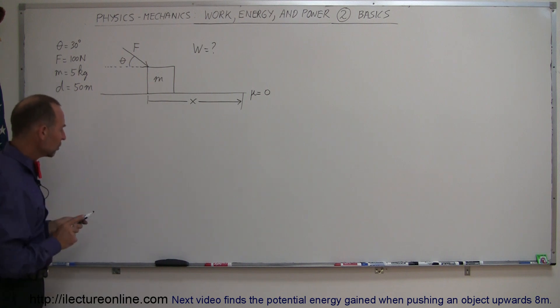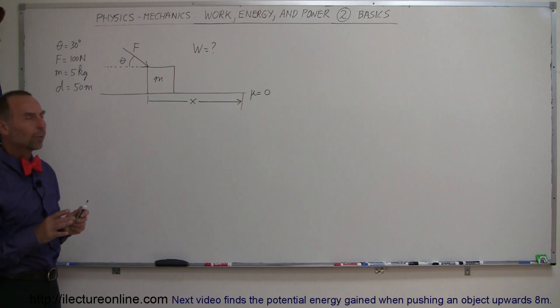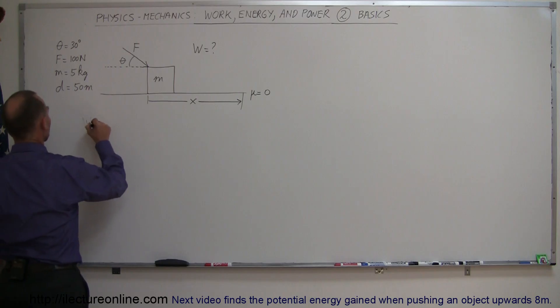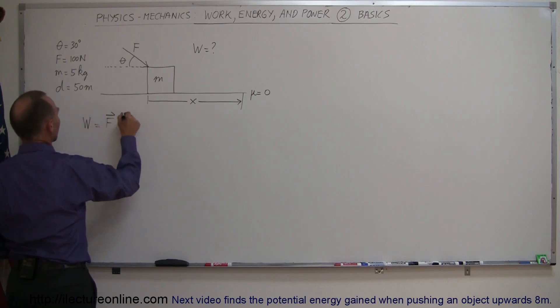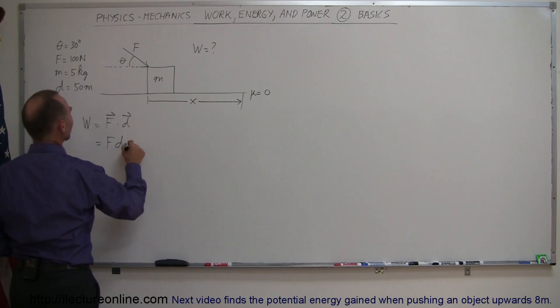Well, what we're going to do is we're going to do this in two different ways. First of all, we can go ahead and use the straightforward definition of work. We can say that work is equal to force dot displacement, so these are vector quantities. This is equal to the magnitude of the force times the magnitude of the displacement times the cosine of the angle between them.